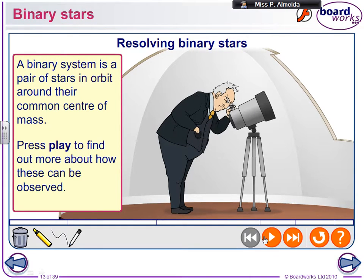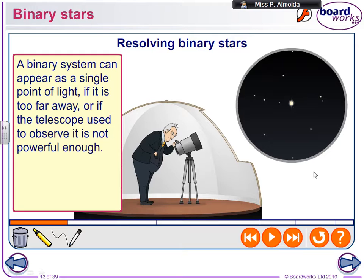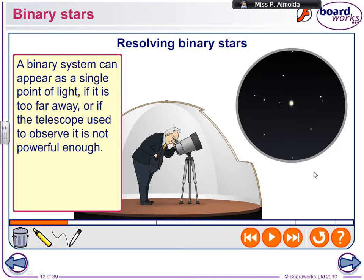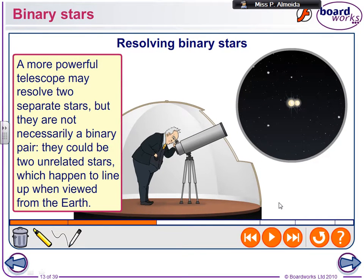So, binary stars. Sometimes you can look in a telescope and you can see a point of light. Now, if your telescope doesn't have enough resolving power, it might show one point of light, where in reality you have two stars — two points of light.